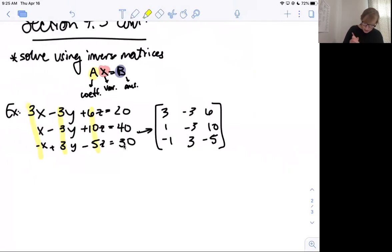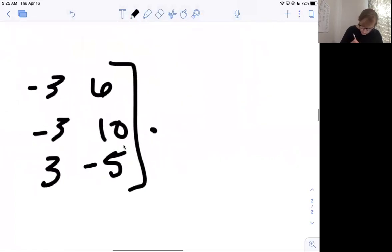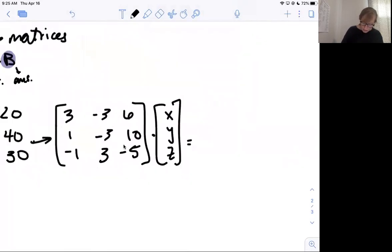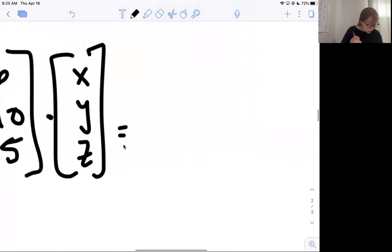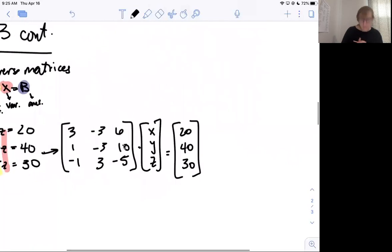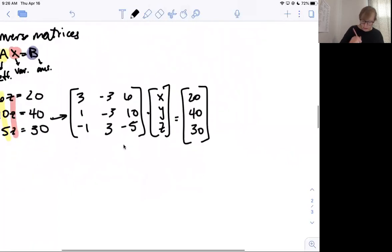Then I got to do all my variables, which is X, Y, and Z. It's a 3 by 1 matrix. And that equals my answers, which is 20, 40, 30. Again, you still can't put X, Y, and Z in your calculator. The only reason we're setting this up is so that we can get it to make sense.